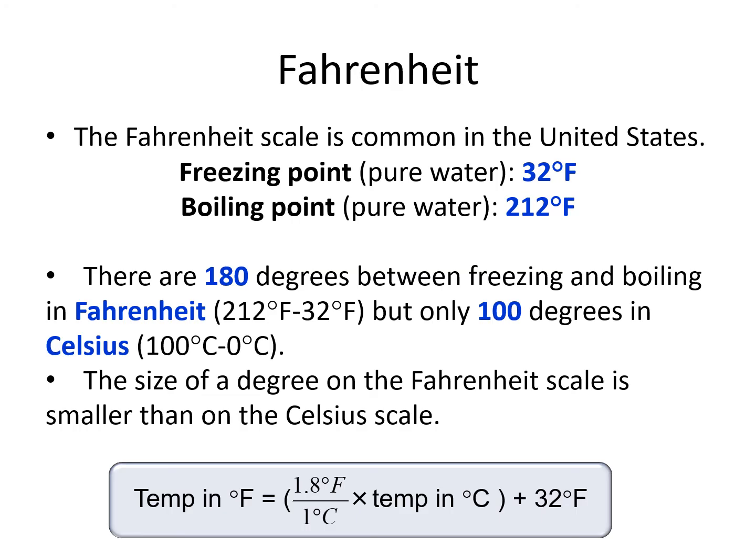212 minus 32 is 180, which means on the Fahrenheit scale there are 180 degrees between the boiling and freezing points of water. This is different from the Celsius and Kelvin scales, which have 100 degrees between the boiling and freezing of water. This makes the size of the degree on the Fahrenheit scale smaller than the size of the degree on the Celsius or Kelvin scales. More of those smaller degrees are needed to reach the boiling point of water.